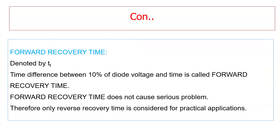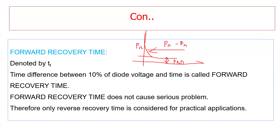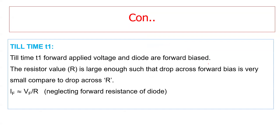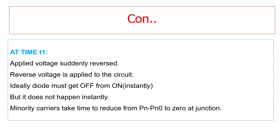The carrier concentration degrades and at thermal equilibrium it is represented as p_n0. The variation is represented as p_n minus p_n0. In spite of that, minus V_R produces a reverse current for some time until the minority carriers reduce. Up to time t1 — the storage time — the forward voltage is applied and the diode is forward biased. The resistor value is large enough to drop the voltage, so the current is maximum, that is I_f = V_f / R.